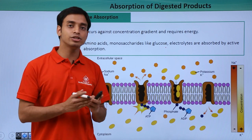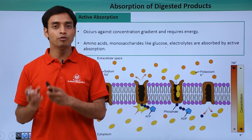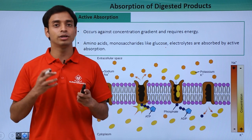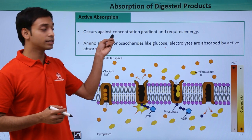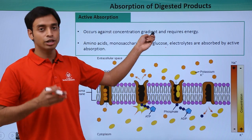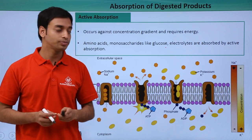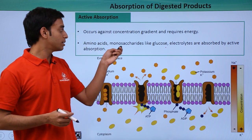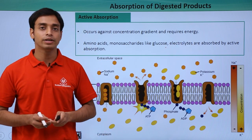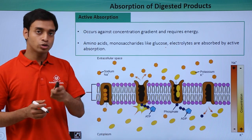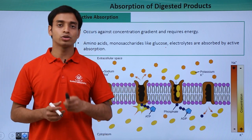The next type is active absorption, where energy is utilized to transport molecules from the intestine into the blood. This occurs against the concentration gradient, so energy is required. Amino acids, monosaccharides like glucose, and electrolytes are absorbed by the process of active absorption.